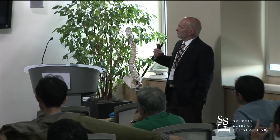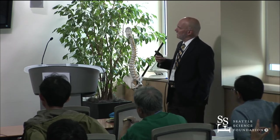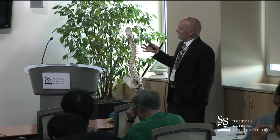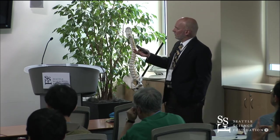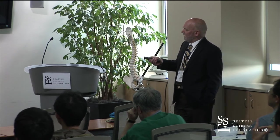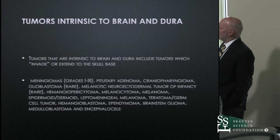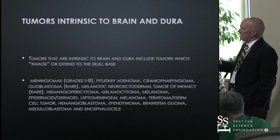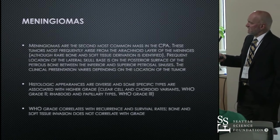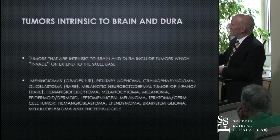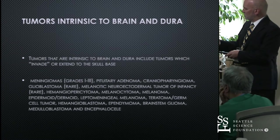Let's start with the tumors that are intrinsic to the brain and dura. Those include tumors that invade or go through the skull base, well known to this audience, including meningiomas, pituitary adenomas, craniopharyngiomas. But there are rare cases where you might see glioblastomas, melanomas, neuroectodermal tumors, and hemangiopericytomas.